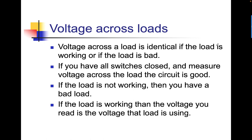Voltage across a load is identical whether the load is working or bad. If the load is working, it's going to be, let's say, 120 volts across a light bulb. If the load is bad, it's still going to be 120 volts because the load is open. The only difference is, if it's working, it's generating light and heat. If you have all the switches closed and measure voltage across the load, the circuit is good. If the load is not working, then you have a bad load. If the load is working, the voltage you read is the voltage that load is using.